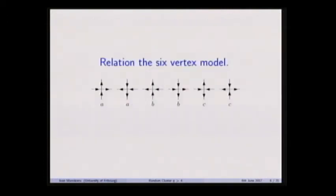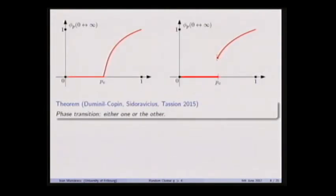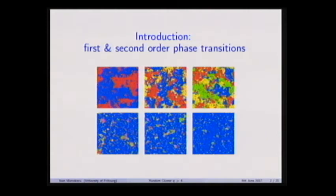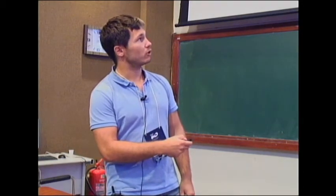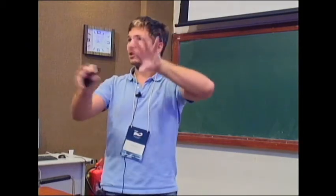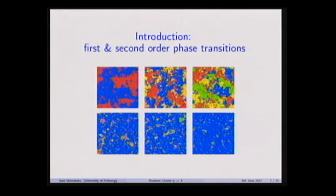The random cluster model is very linked to the Potts model. The Potts model is a coloring of the vertices in Q colors with a certain energy, very similar to the Ising model but with more than two spins. The simulations shown are the Potts model with 2, 3, 4, 5, 6, 9 colors at the critical point with blue on the outside. You immediately notice that for Q equals 2, 3, 4 there's coexistence of different colors, but at Q equals 5 or more, one color beats the other — the boundary conditions influence all spins. This is exactly what we're proving.